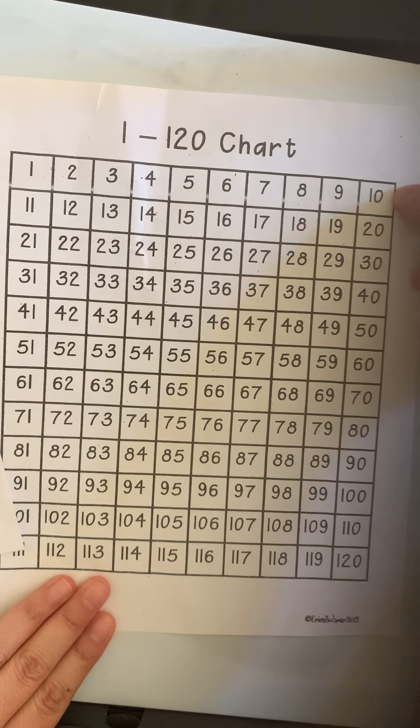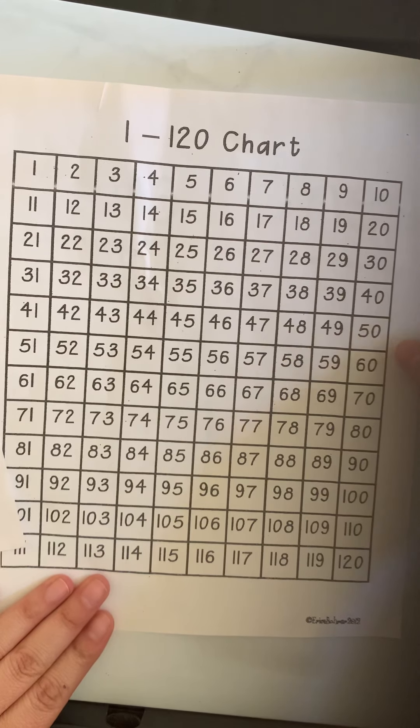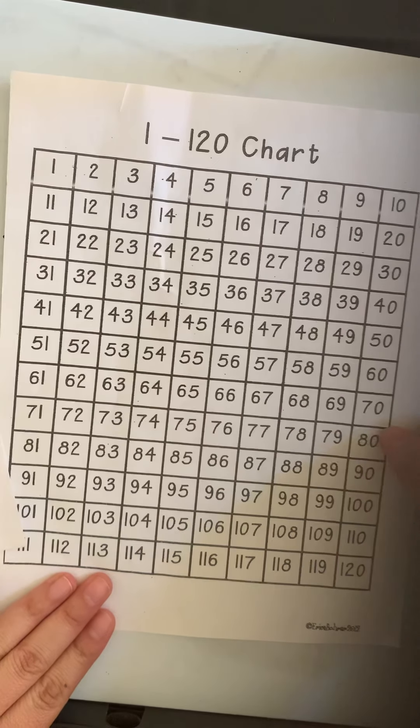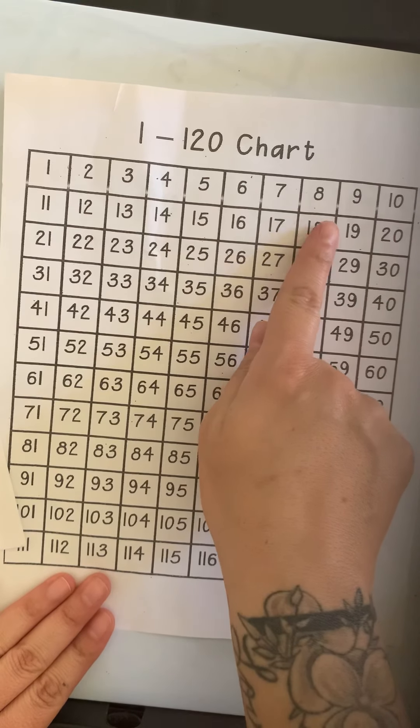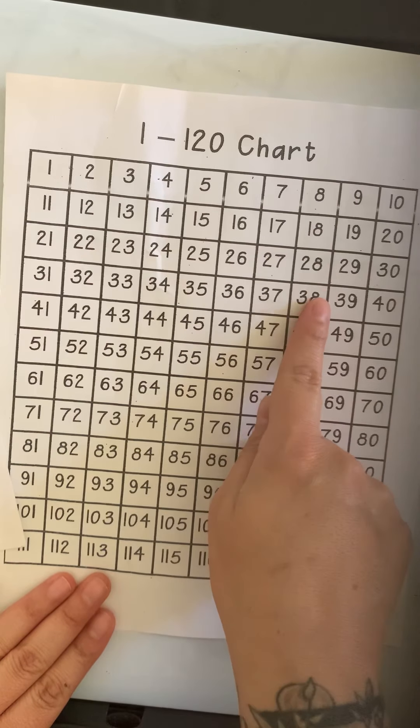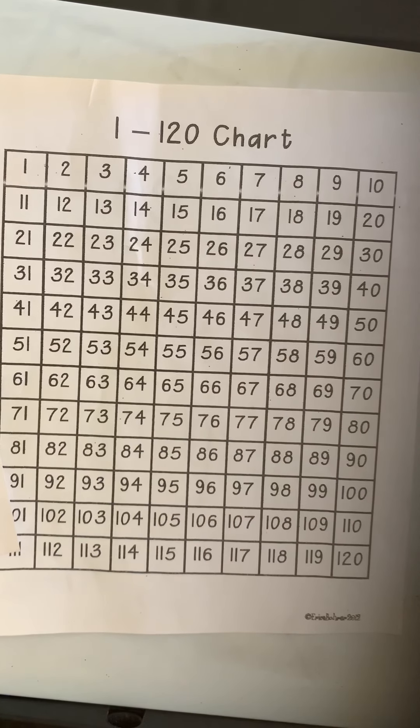Because if we count by 10s, we see the row goes 10, 20, 30, 40, 50, 60, 70, 80, 90, 100. Always, always, always, the tens place gets bigger when we're working with 10 more, and the ones place will stay the same.